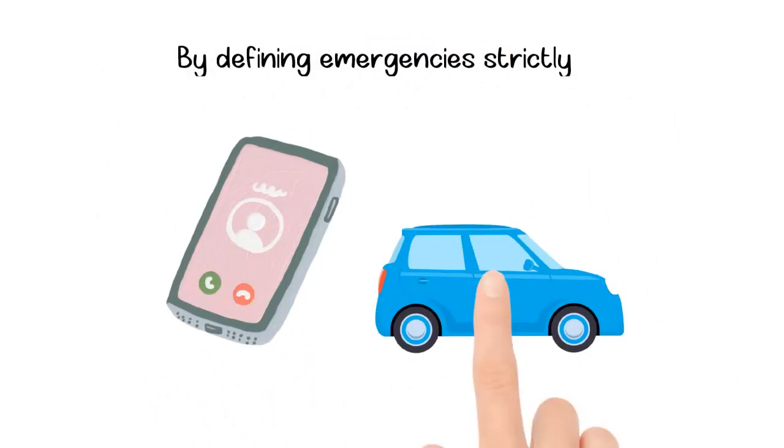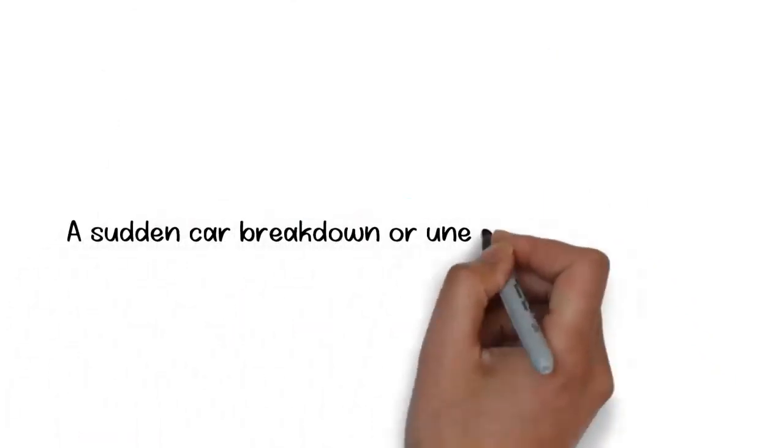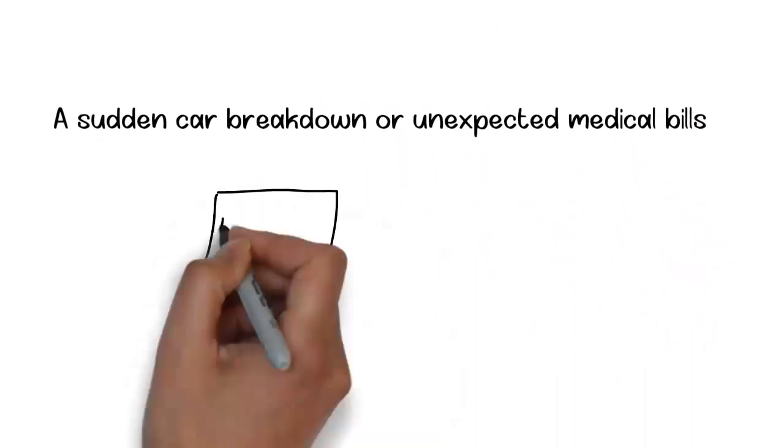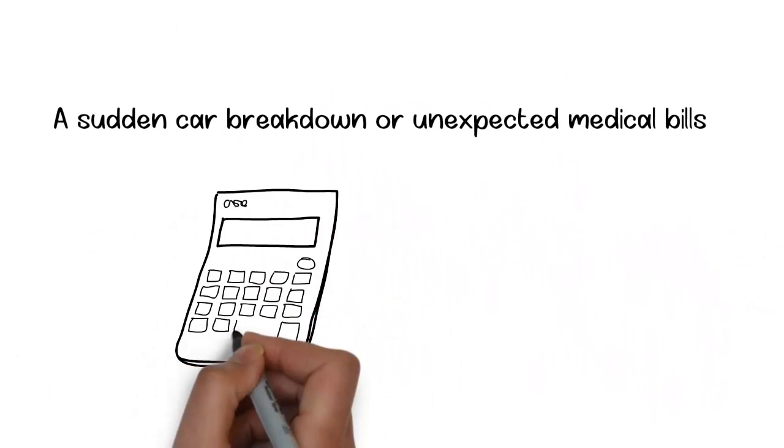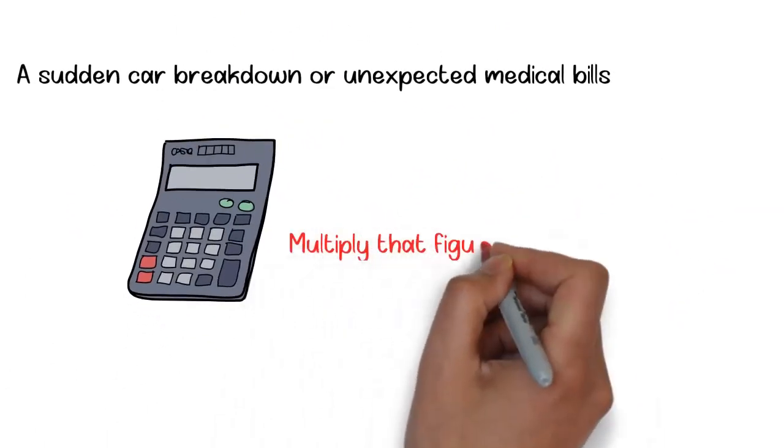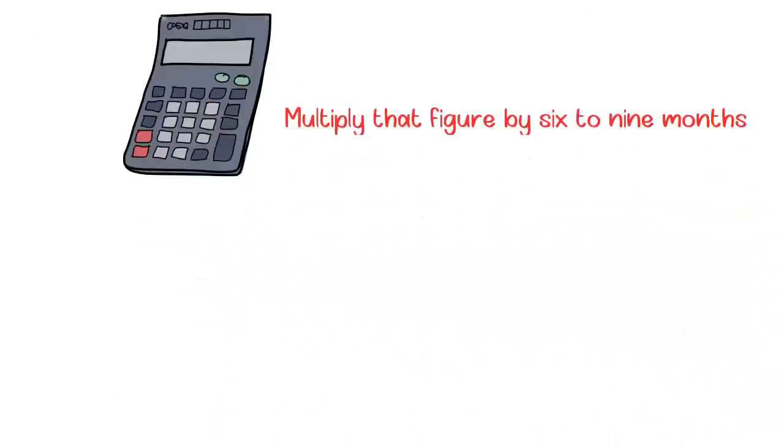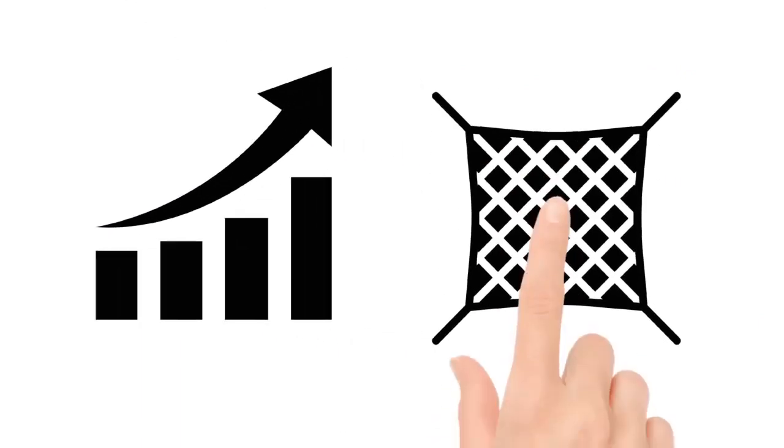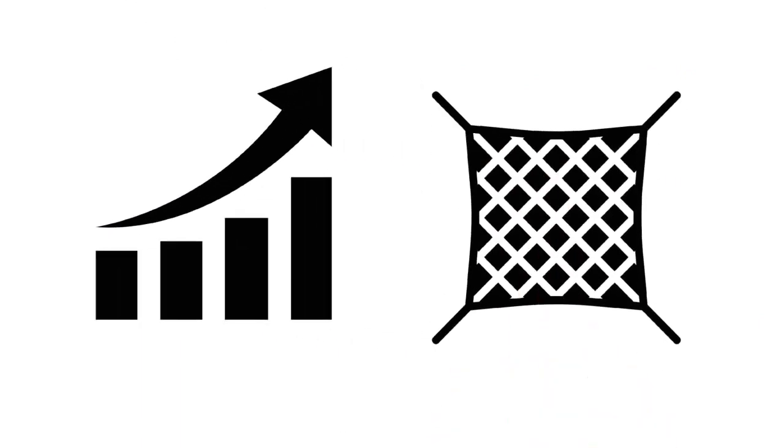By defining emergencies strictly, we can avoid mistaking a phone or car upgrade for an emergency. A sudden car breakdown or unexpected medical bills, however, qualify as emergencies. Take a moment to calculate how much you would need to survive if you lost your source of income. Multiply that figure by six to nine months and strive to save up to that amount. Remember, emergency savings are not meant to generate profits. They provide a safety cushion to protect your long-term savings and investments from unforeseen short-term expenses.